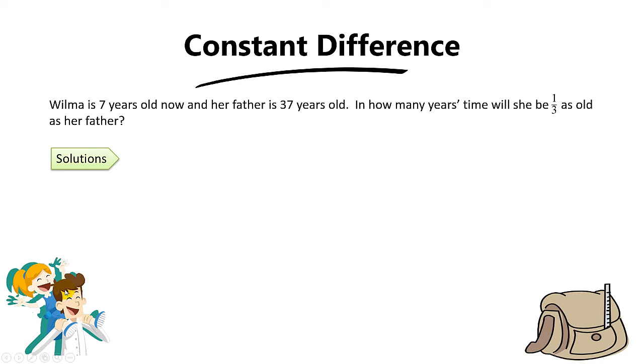Because when Wilma grow old by one year, her father will also grow old by one year. So that's why the difference between them will always be the same and that's why the concept used will usually be constant difference.